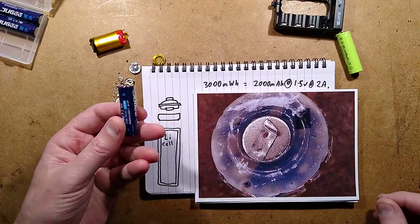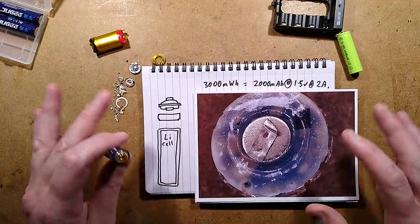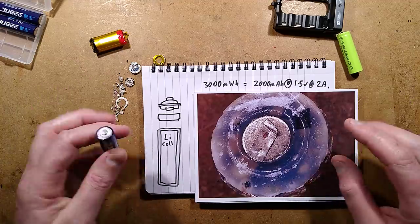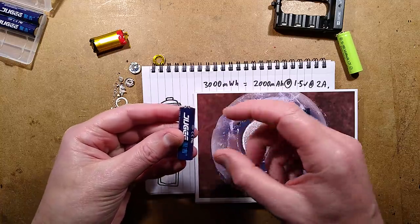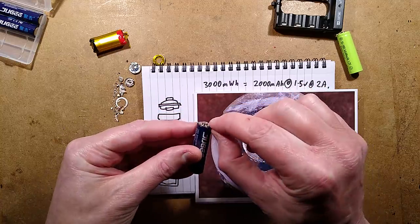Jugi rechargeable lithium 1.5 volt battery, the short version. The long version is over 30 minutes. This is a much abbreviated version. These are basically rechargeable batteries that contain a lithium cell inside with a bit of circuitry to convert from the high voltage down to 1.5 volts.